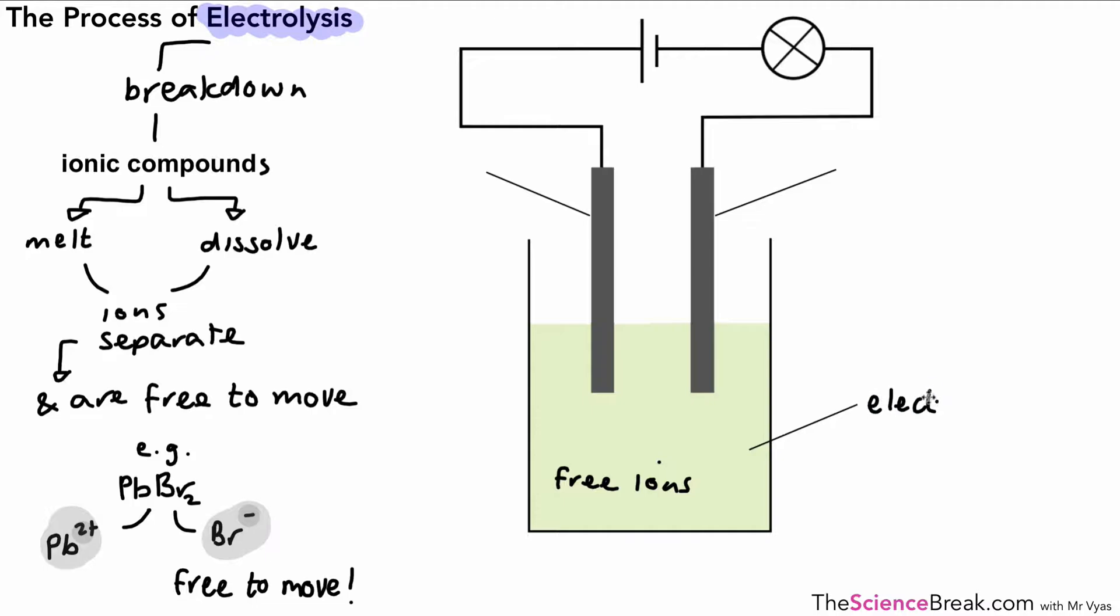That's the liquid that we carry out the electrolysis on. The example here is lead bromide. One feature of our electrolyte, in fact all electrolytes, is that they can conduct electricity. The electrolyte can conduct electricity, which means it's able to carry a charge. The reason why it's able to carry a charge is because of all those ions that are free to move. That's a very important point—electrolytes can conduct electricity because the ions are free to move.